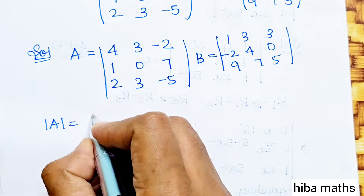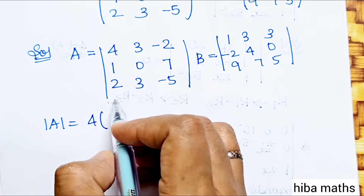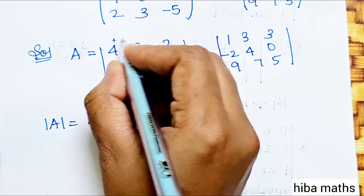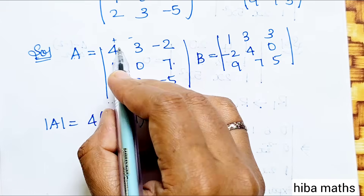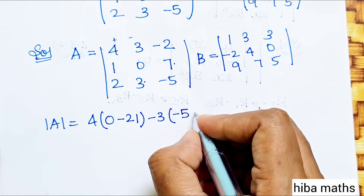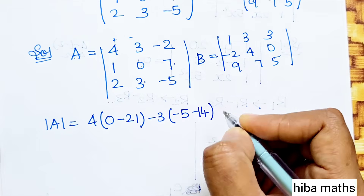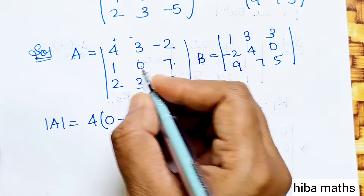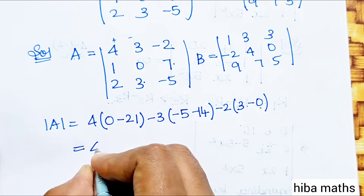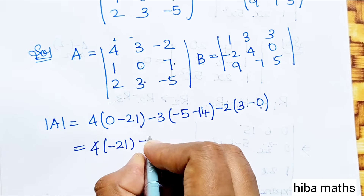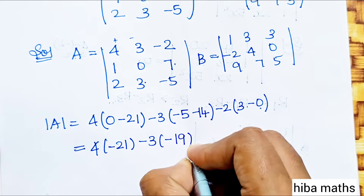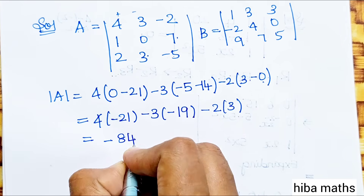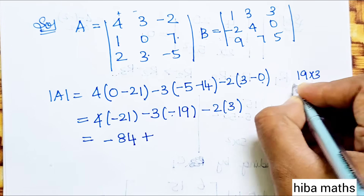First find det(A). Expanding along first row: first column entry gives 4×(0×(−5) − 7×3) = 4×(−21) = −84. Second column: −3×(1×(−5) − 7×2) = −3×(−19) = 57 — wait, minus 3 into (−5 −14) = minus 3 into (−19). Third: (−2)×(1×3 − 0×2) = (−2)×3 = −6. So det(A) = −84 + 57 − 6.